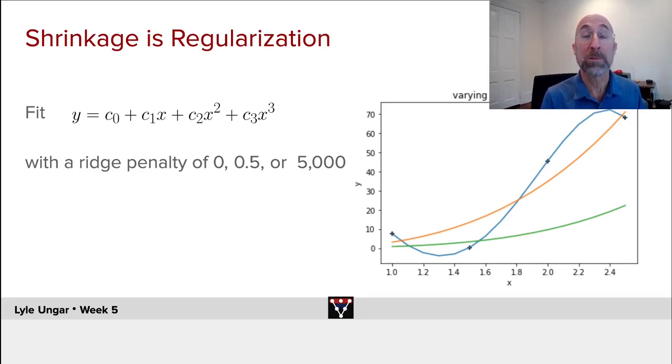If you use a huge ridge penalty, say 5,000, you get the green line, nice and smooth, but very flat.